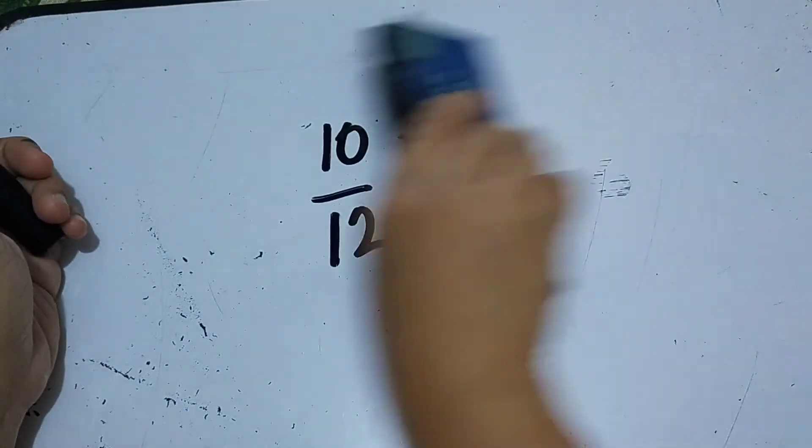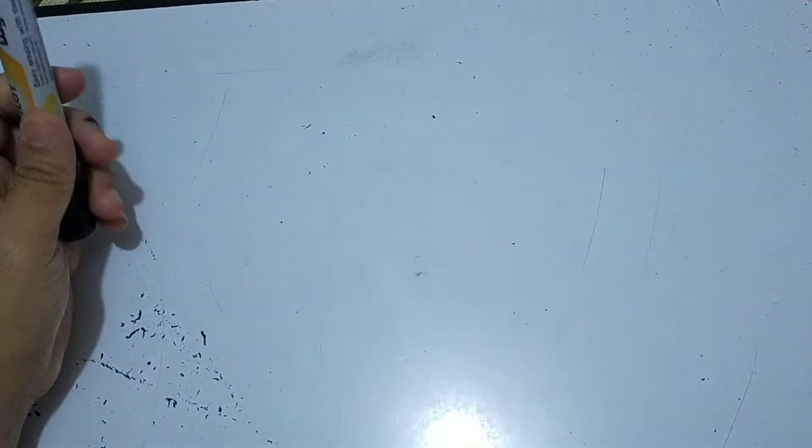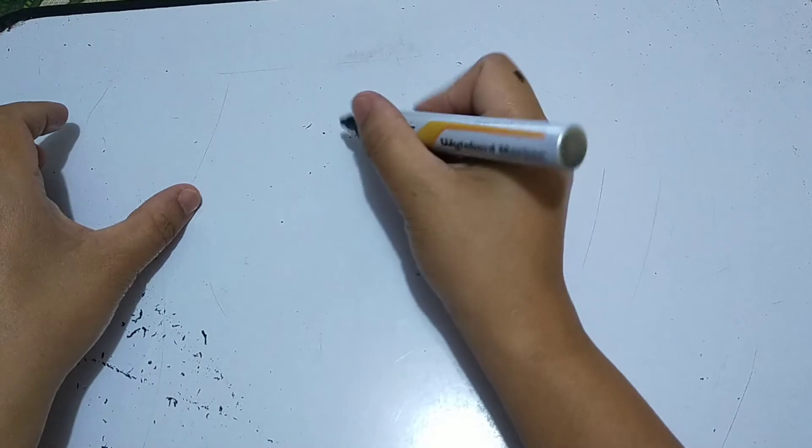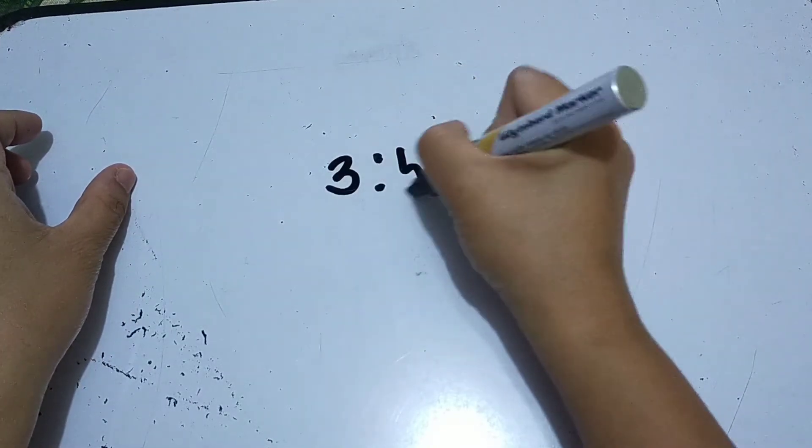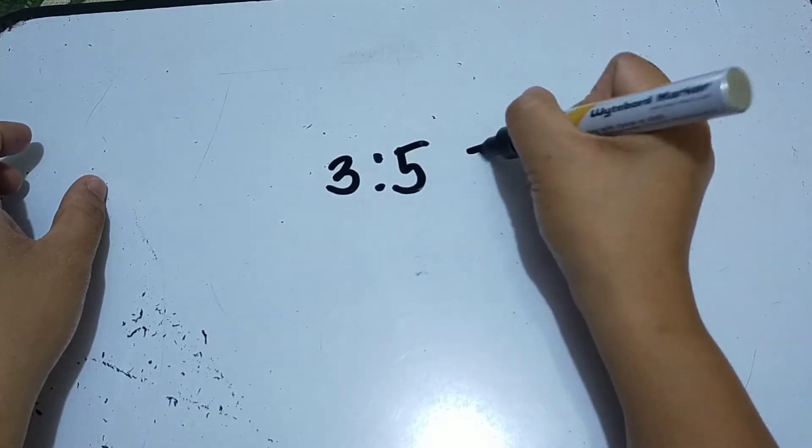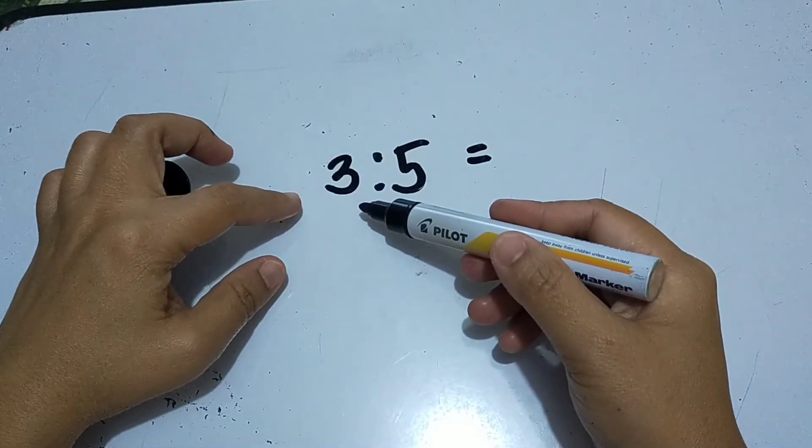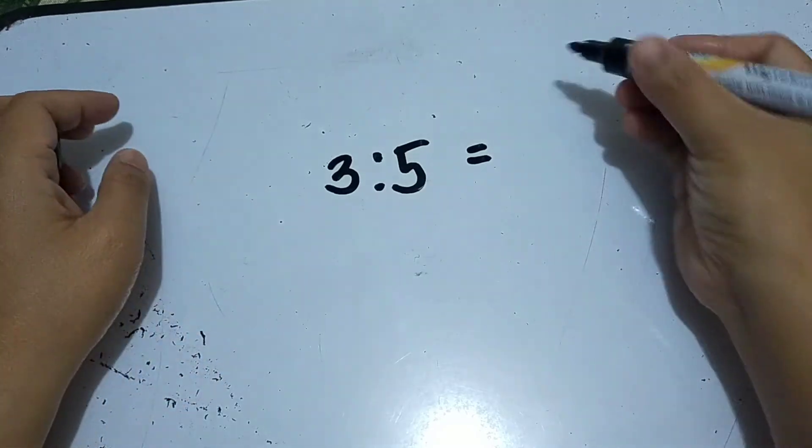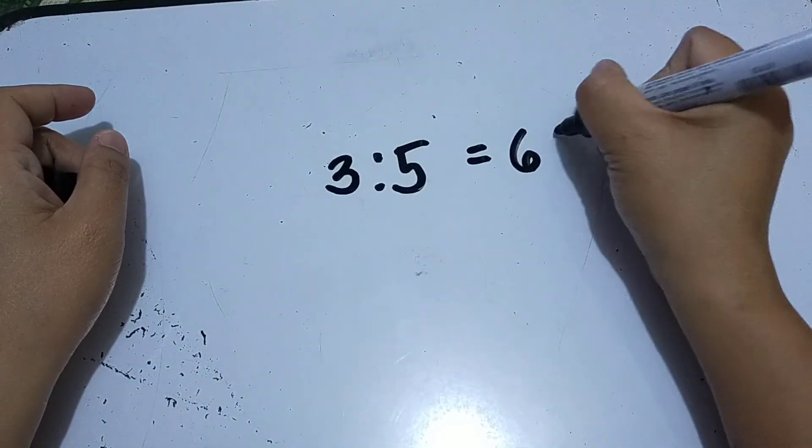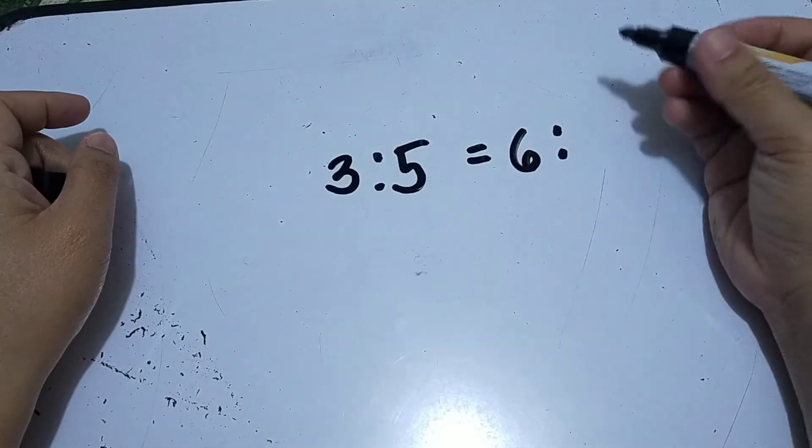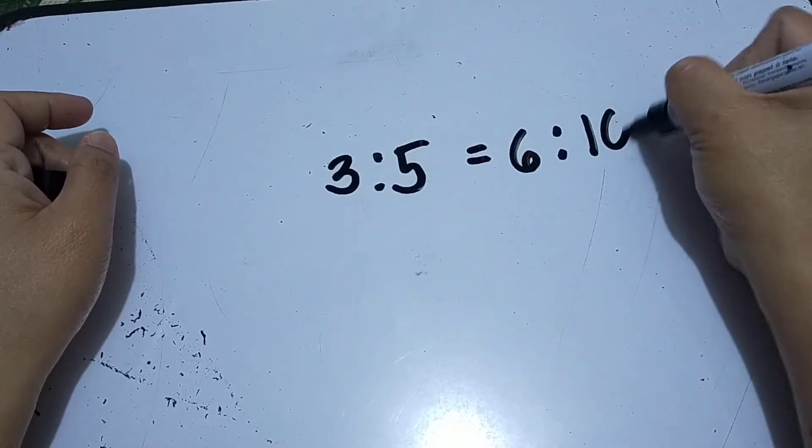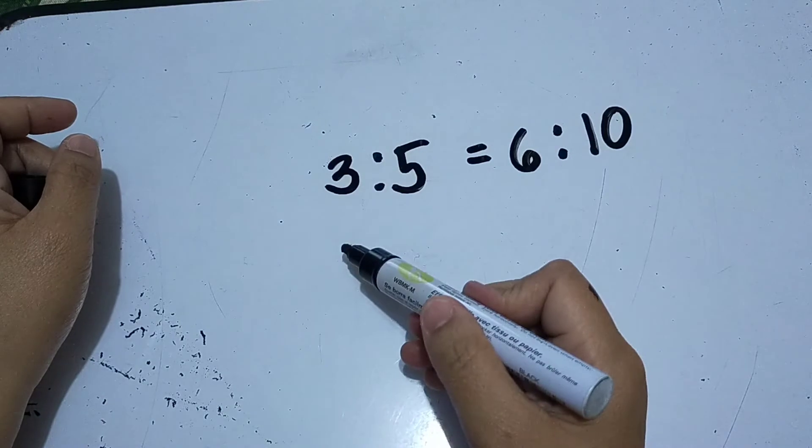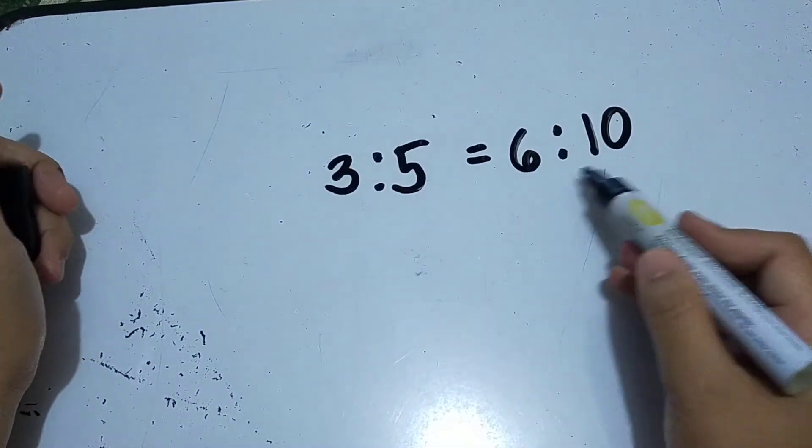In colon form, we can also use colon form. So let's say, 3 is to 5 equals to—just think, multiply both by 2. 3 times 2 is 6, 5 times 2 is 10. Therefore, the equivalent ratio of 3 is to 5 is 6 is to 10.